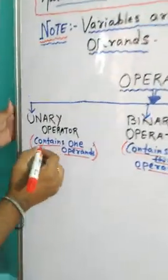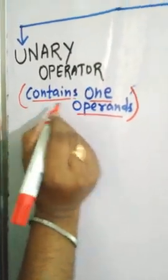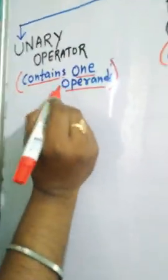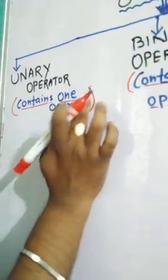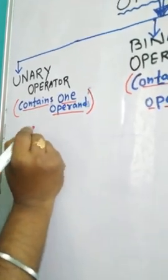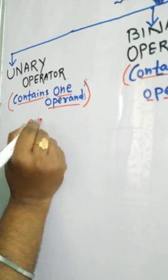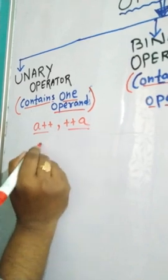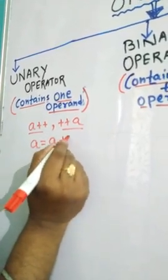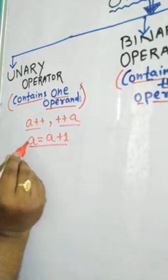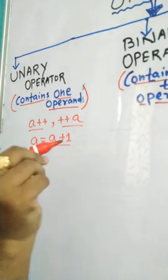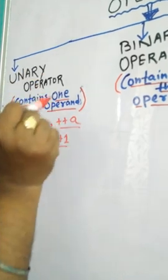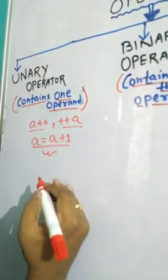A unary operator contains one operand — that means one variable. If an operator contains one operand, it is called a unary operator. For example, writing a++ or ++a means a equals a plus one. Here there is only one variable, a, so this is called a unary operator.